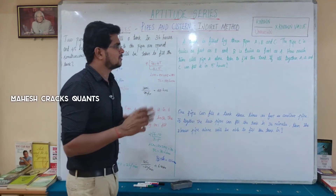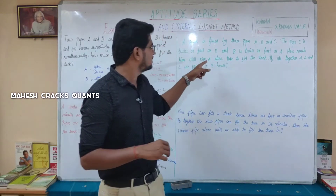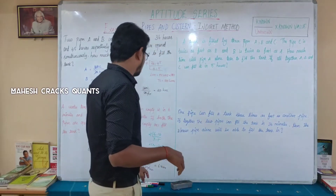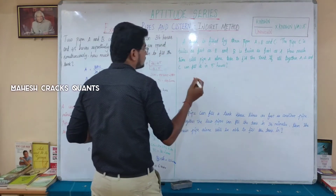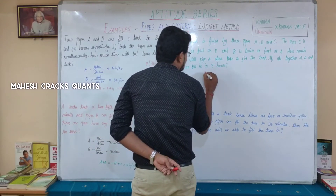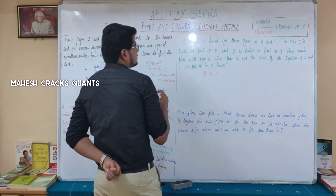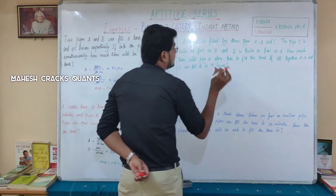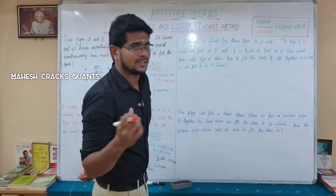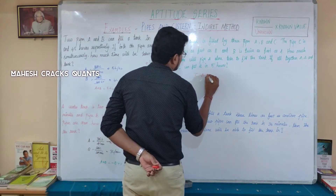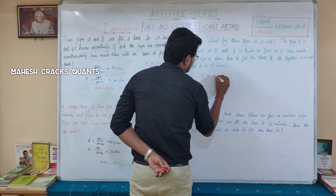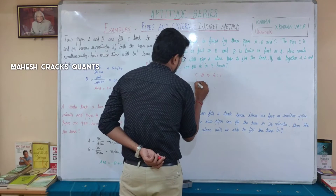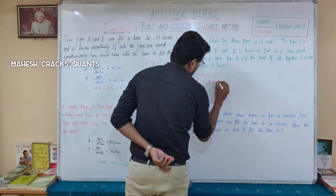Let's find the ratio. C is twice as fast as B, so C to B is 2 to 1. B is twice as fast as A, so B to A is 2 to 1. Therefore the efficiency ratio of A to B to C is 1x to 2x to 4x.